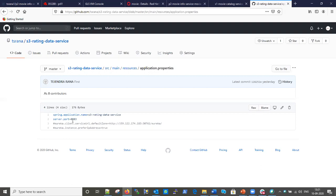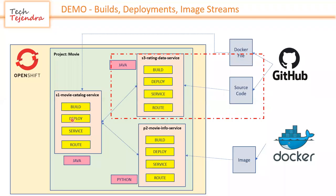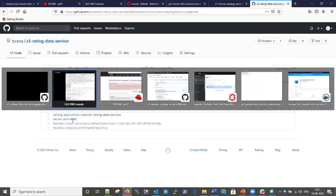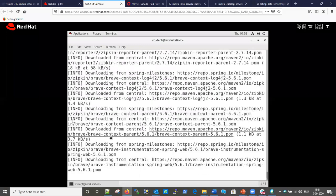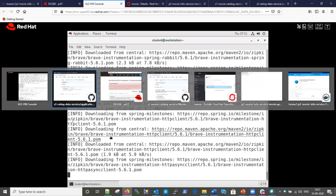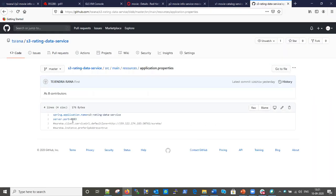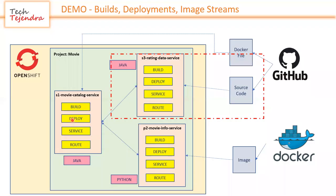Later we will go into the service and change it from 8080 to 8083, because this application listens on port 8083. I deliberately did that so I can show you how service and route will work. After that we will also generate the route. Going back to our diagram: we will deploy the S3 microservice as part of this demonstration. P2 is already deployed. For the third part we will use the Dockerfile.